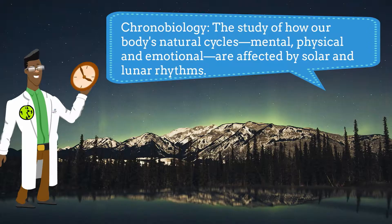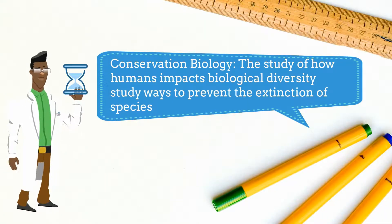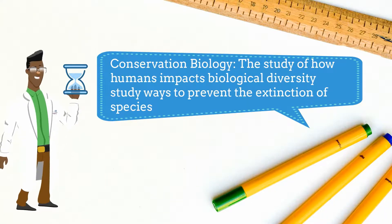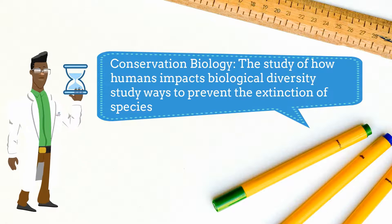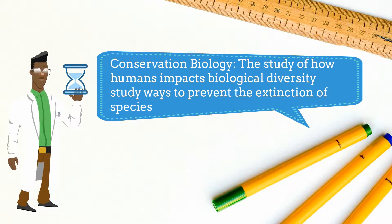Chronobiology is the study of how our body's natural cycles — including mental, physical, and emotional — are affected by solar and lunar rhythms. And conservation biology is the study of how humans impact biological diversity and also